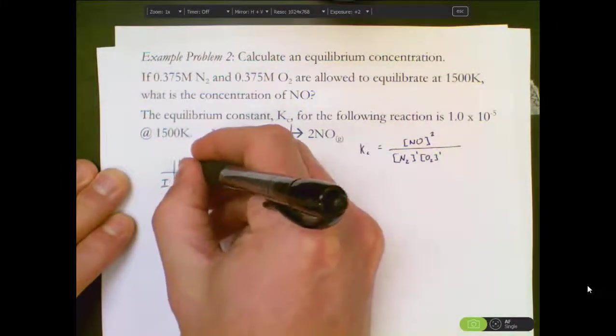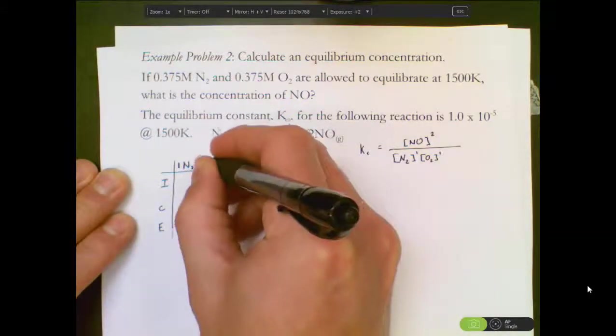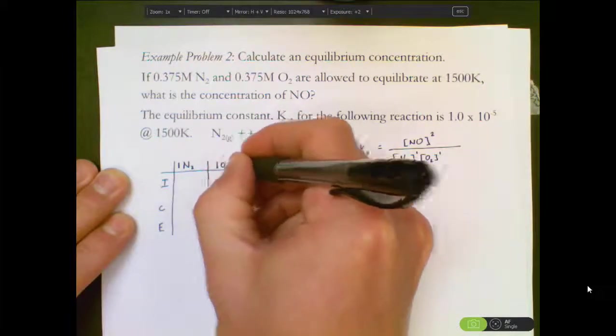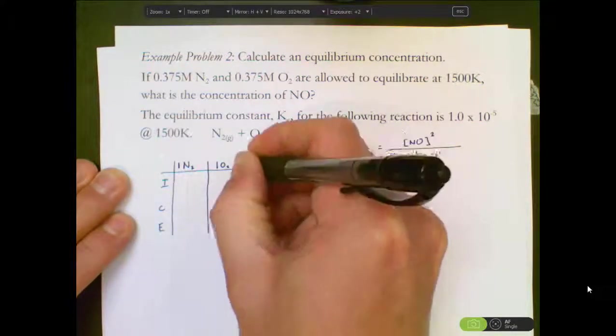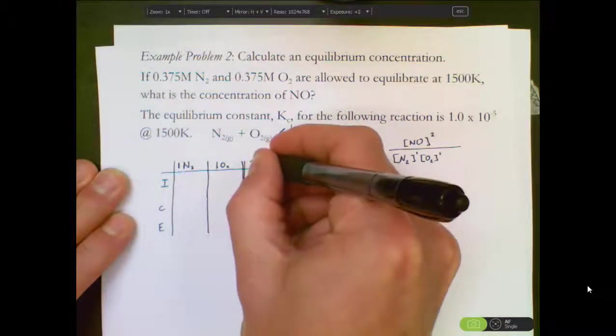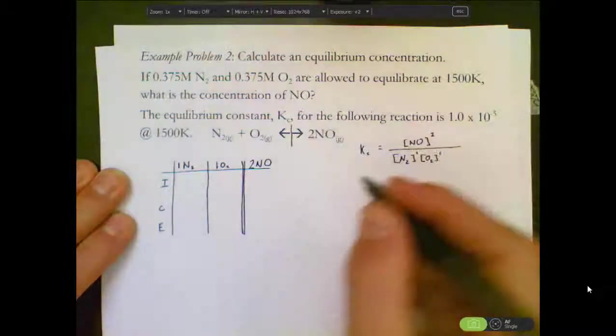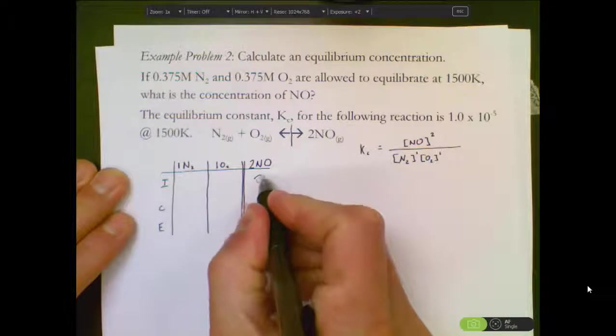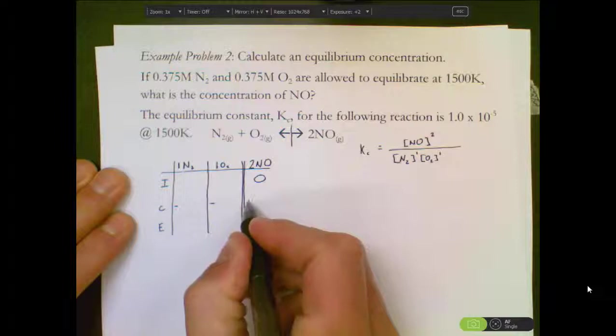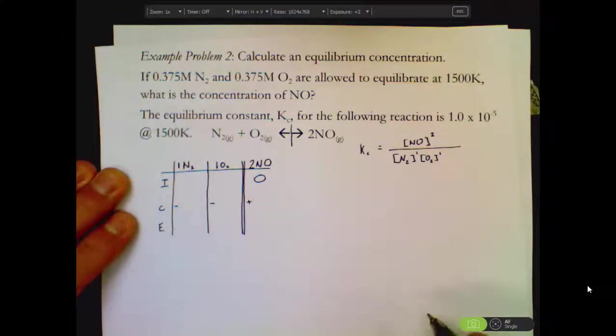So we have N2 as a reactant, coefficient of 1. One copy of O2. And those products are dealt with a little differently. 2NO. Always products are zero. We know that the difference will be a decrease, a decrease, an increase when we're talking about the change in concentrations.